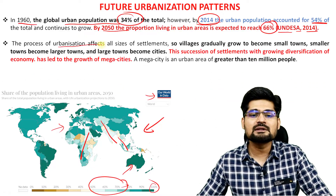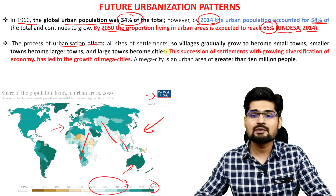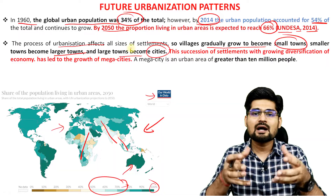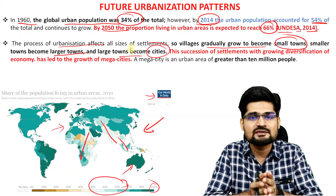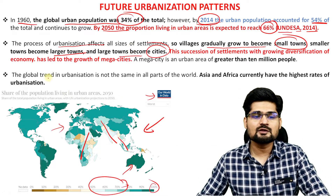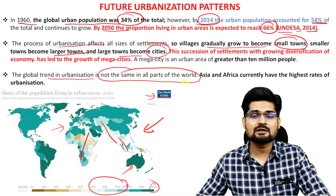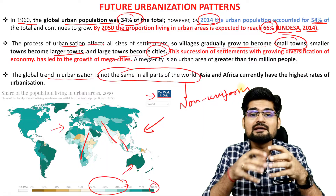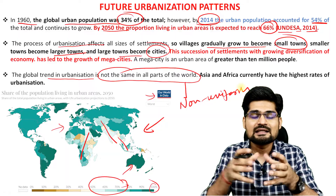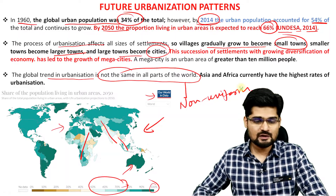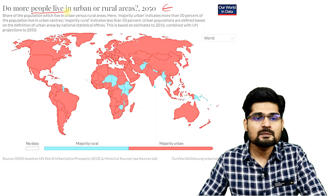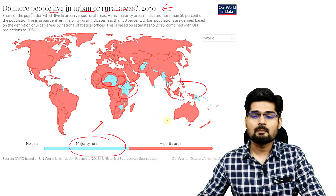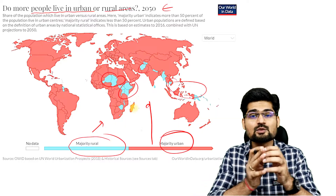The process of urbanization affects all sizes of settlements, not just smaller cities. Villages gradually grow to become smaller towns, smaller towns grow into larger towns, and larger towns become cities, and further into Megapolis, Megalopolis, and Conurbations — this is the growth pattern happening through the hierarchy of settlement systems. The global trend in urbanization is not the same in all parts of the world — it is non-uniform. By 2050, majority rural will only remain in some portions of Africa and Asia, while majority urban is going to be the entire rest of the world, and this world divide is what we are observing. This pattern is very important for sustainable development practices.